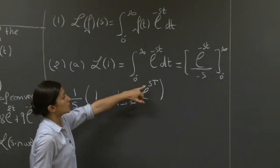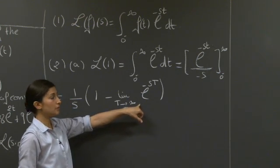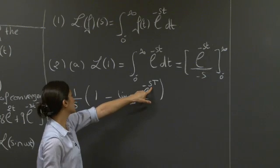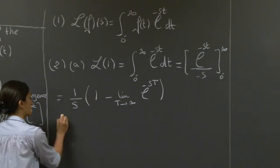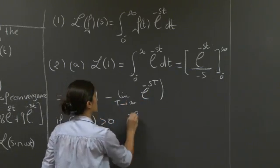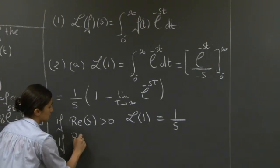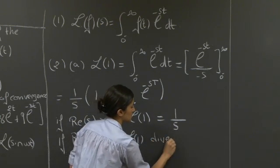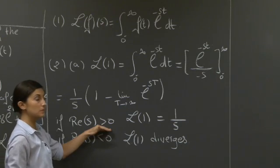Here the sign of s becomes important. If s is positive, then this term goes to 0 as t goes to infinity. If s is negative, then this term diverges, and we're no longer in the domain of convergence of the Laplace integral. But s could also be complex, so what we're interested in is really the sign of the real part of s. If the real part of s is positive, this term goes to 0 and the Laplace transform of 1 is just 1 over s. If the real part of s is negative, the Laplace diverges. So the domain of convergence is where the real part of s is positive.